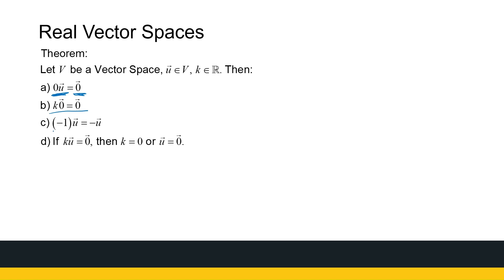Minus 1, the constant minus 1, the scalar minus 1 times a vector u must give me my minus u that I've defined. And if a scalar times a vector gives me the 0 vector, then either the scalar is 0 or the vector is the 0 vector. So these are properties that must hold for any vector space. In the next series of videos, we're going to be looking at subspaces of vector spaces.